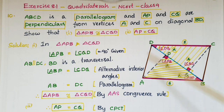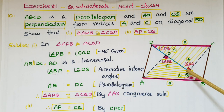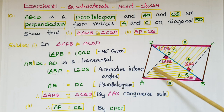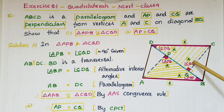So here we have to show that AP is equal to CQ. These two are sides of the two triangles, so we can equate these two sides. Therefore AP is equal to CQ by CPCT.